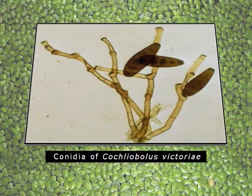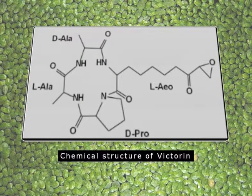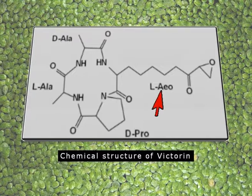The next important group of toxins is the host-specific toxin, so called because it invades only specific hosts — in other host plants it is of no use. One such toxin is victorin, produced by Cochliobolus victoriae. The conidia cause the disease of leaf spot or leaf blight of oats. Chemically, victorin is a complex polypeptide formed of D-alanine and L-alanine, proline, and the AEO protein.